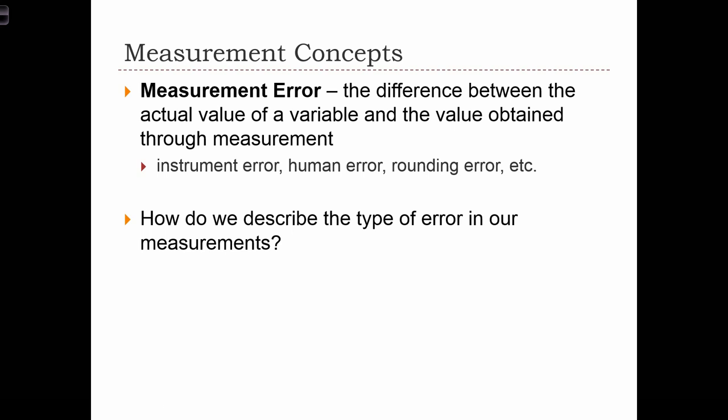The last topic we're going to cover in this lecture involves our understanding of how accurate and precise our measured data values are. We're going to define measurement error as the difference between the actual value of a variable and the value obtained through measurement. So we all have an actual height, but when I measure your height with a tape measure, I might make a small mistake, and the value I record might be slightly different from your true height. That difference is what we call measurement error.